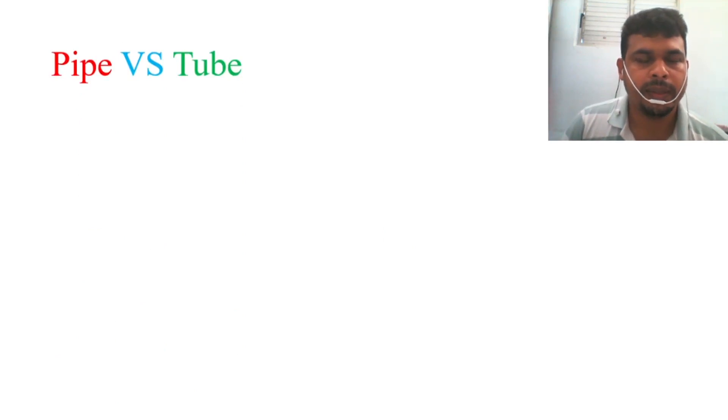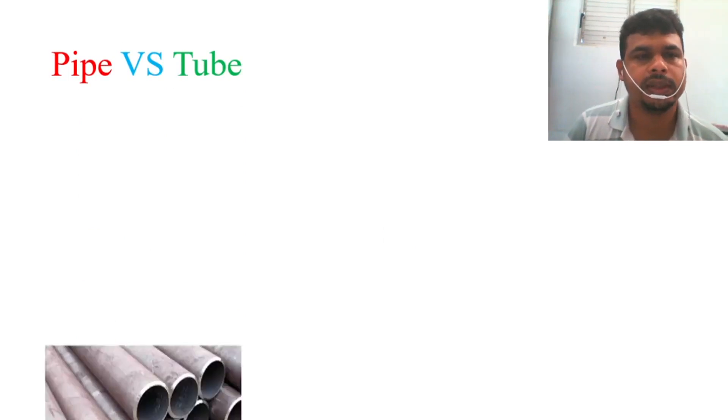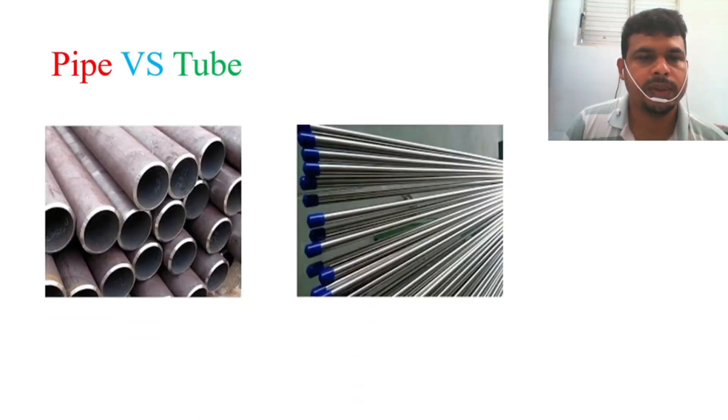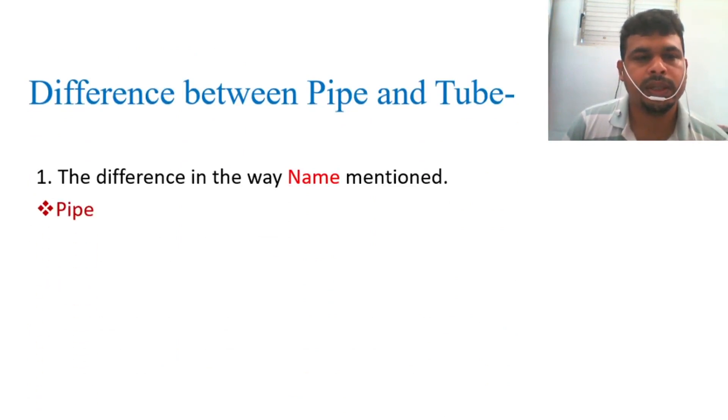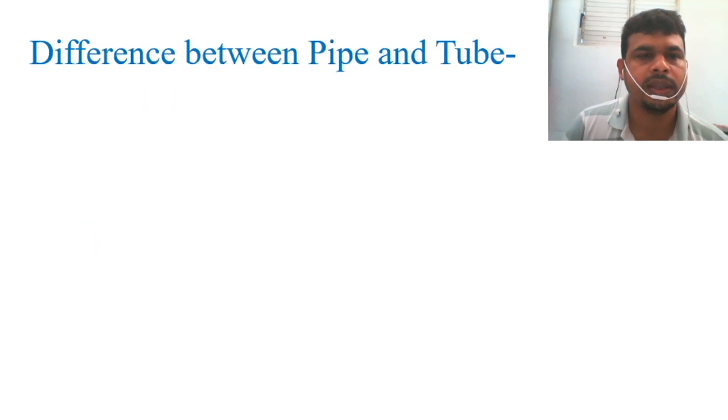We will now know pipe versus tube. What is pipe and what is tube you already understand. So we will see what is the difference. In these photos you can see the left side is pipe and right side is tube. So difference between pipe and tube: first difference is the name mentioned. Actually there have one is pipe and one is tube. So by name you can say yes, two have some differences. Second thing is the difference in the way size is mentioned.